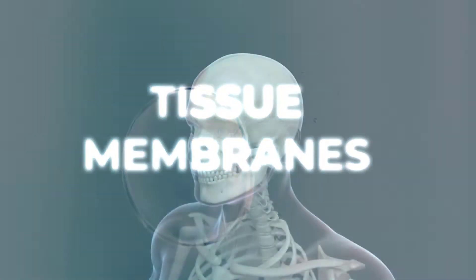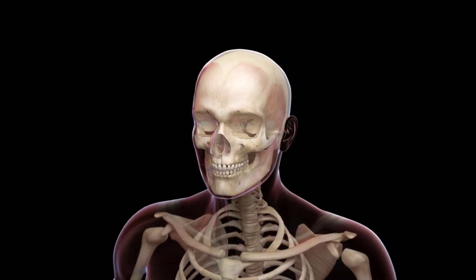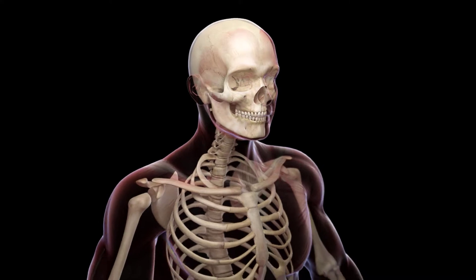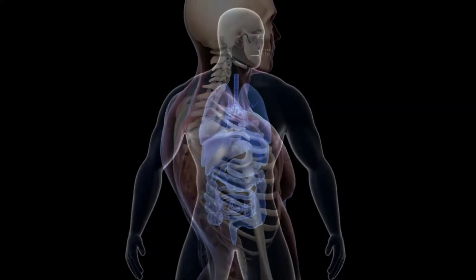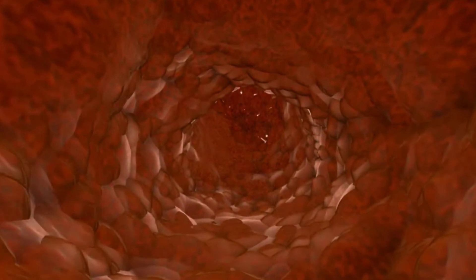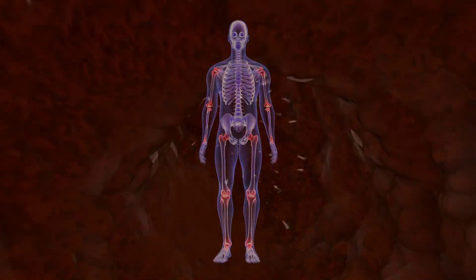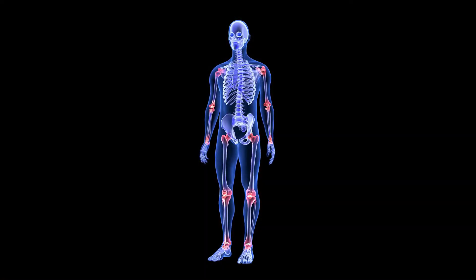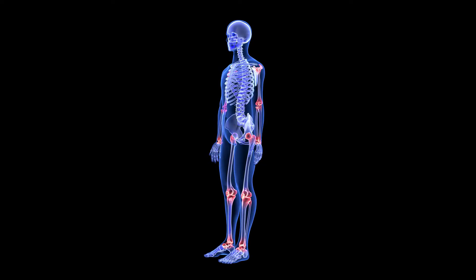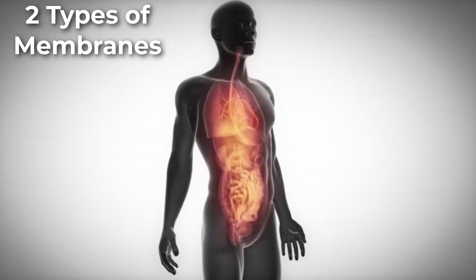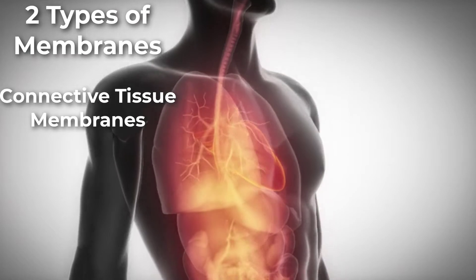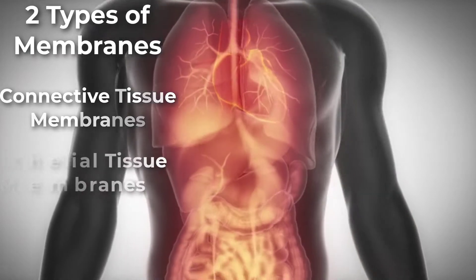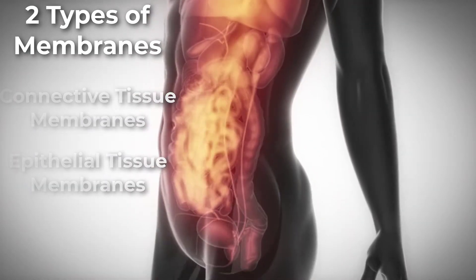A tissue membrane is a thin layer or sheet of cells that covers the outside of the body, the organs, the internal passageways that lead to the exterior of the body, and the lining of the movable joint cavities. There are two basic types of membranes: connective tissue membranes and epithelial membranes.